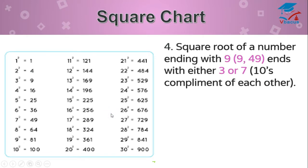Square root of a number ending with 9 ends with either 3 or 7. Square of 3 is 9, square of 7 is 49. Both end with 9.